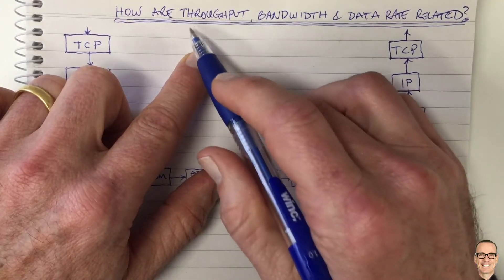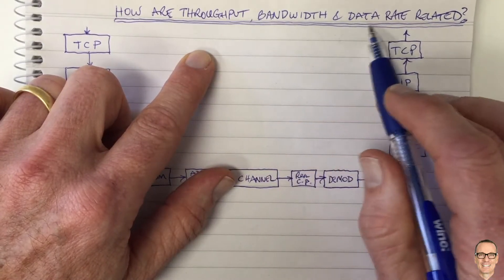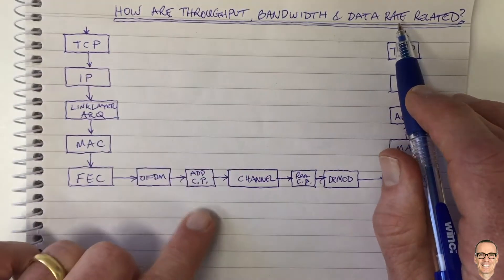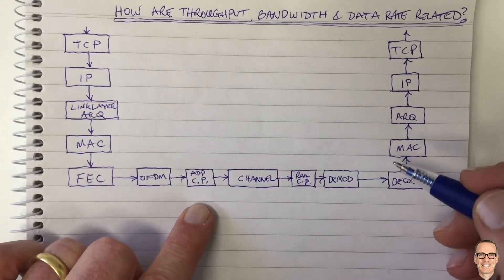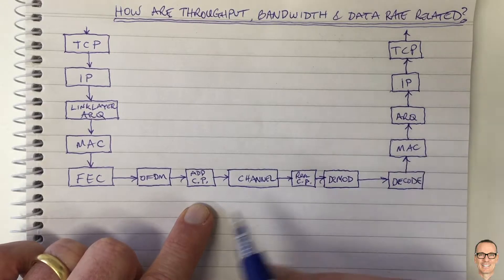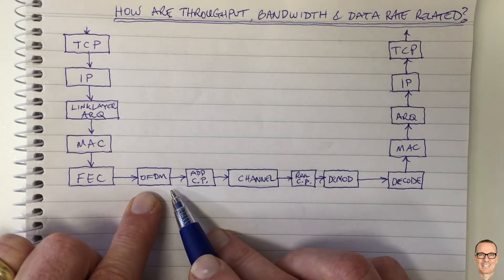Let's look at the relationship between throughput, bandwidth and data rate. We're going to take a typical communication system like the 802.11a OFDM-based system and use that as our example.